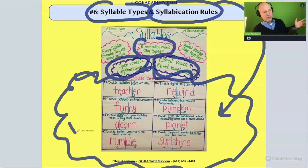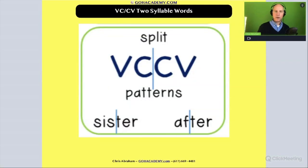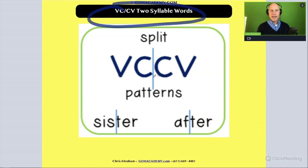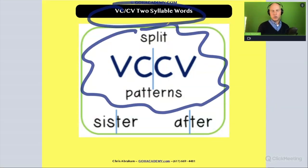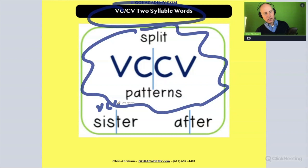Let's review the Vowel-Consonant-Consonant-Vowel (VCCV) rule. This rule works for two-syllable words where there's a vowel-consonant-consonant-vowel pattern. The most basic words that involve this pattern are words like 'sister' and 'after,' where you have vowel-consonant-consonant-vowel.